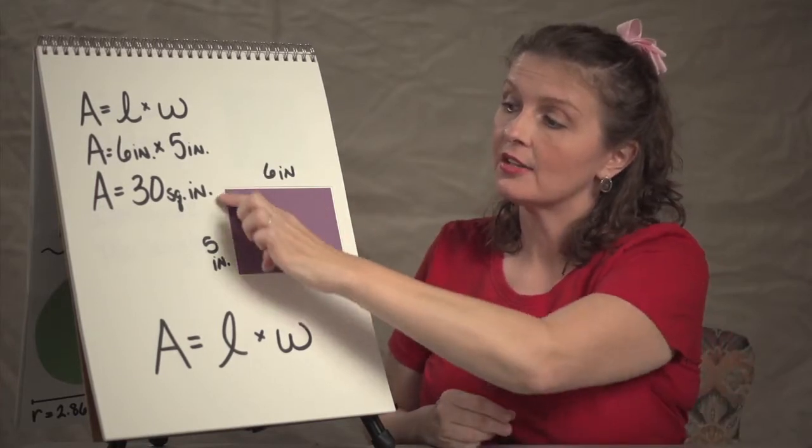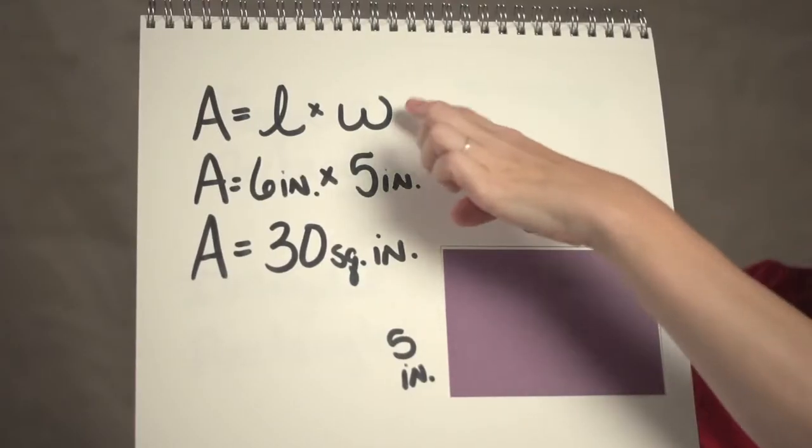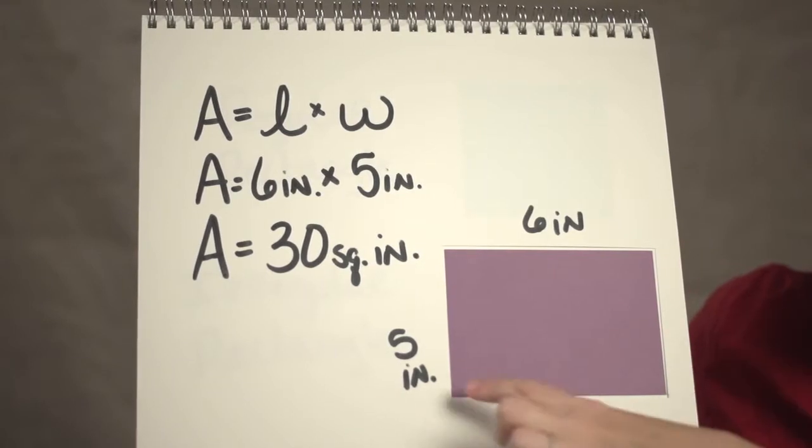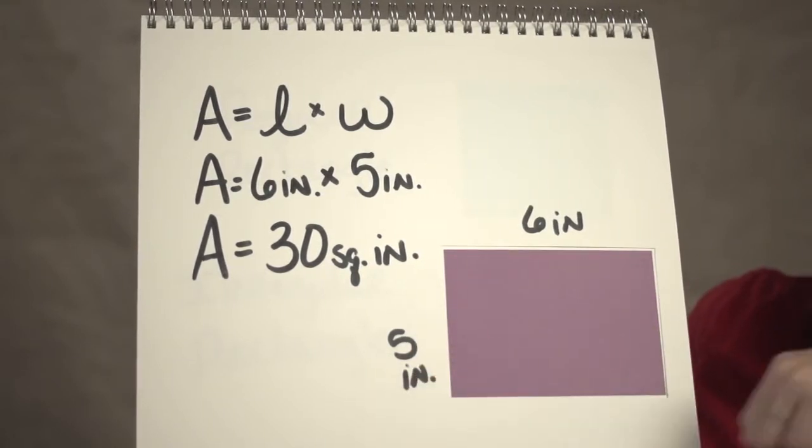is the length times the width, those two dimensions, which is six inches by five inches or 30 square inches.